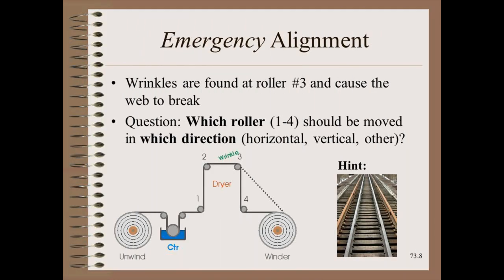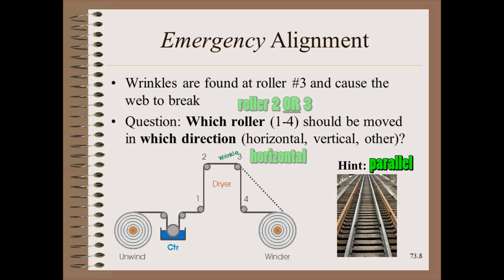Knowing web handling allows us to do practical problem solving. Suppose the web is wrinkling on roller number three — which roller, in which direction, should be moved to clear the wrinkle? We would move either roller two or roller three in the horizontal direction to make the pair parallel. Wrinkling physics tells us that the wrinkle forms on the downstream side of the pair that is not parallel. Thus, a wrinkle on three does not mean that three is crooked and two is straight. Roller two could be crooked and roller three straight, or both could be crooked — what matters is that they are not parallel.